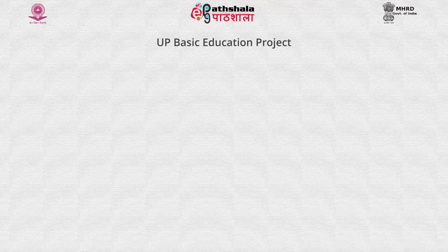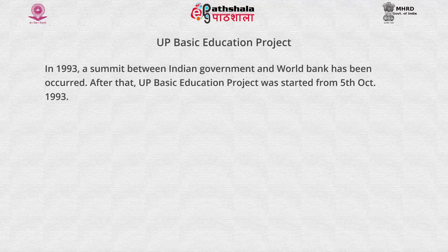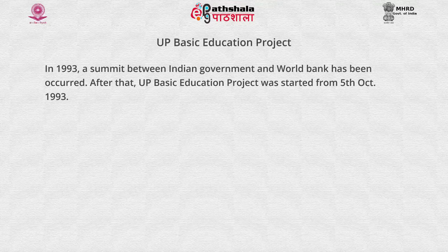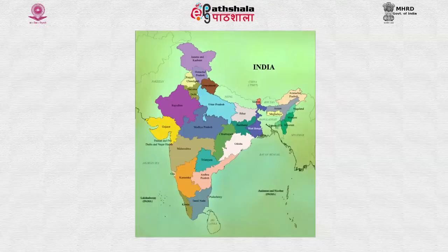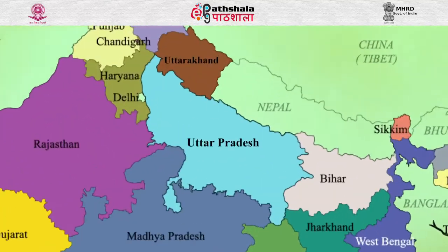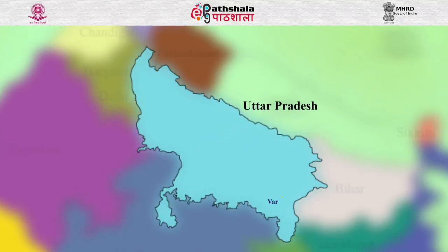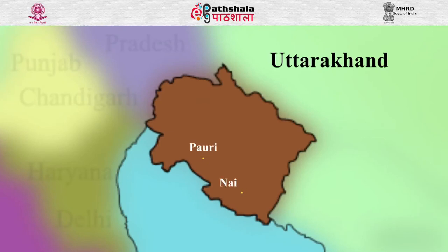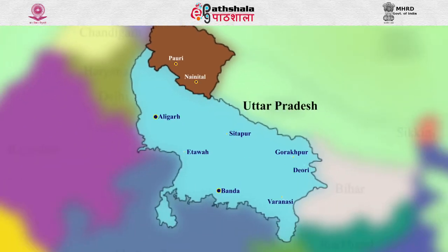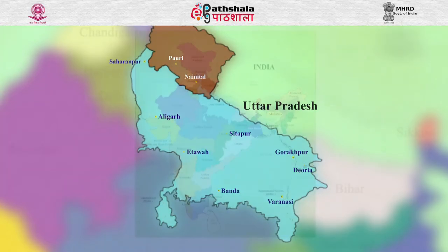Now let us know about the UP Basic Education Project. In 1993, a summit between the Indian government and World Bank occurred, after which the UP Basic Education Project was started from 5th October 1993. This program was first implemented in 10 districts including Varanasi, Gorakhpur, Banda, Itava, Sitapur, Aligarh, Nainital, Devariya, Saharanpur, etc. After that, it was implemented in additional districts such as Baliyah, Eta, Haradoi, Sultanpur, Barabanki, Baharaich, Pilibhit, Rampur, Tihari, etc.